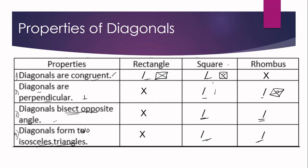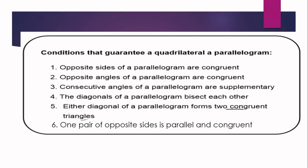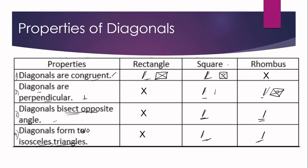Notice that all of our properties are possessed by the square. Why? Because if a property is true for a rectangle, it is also true for a square, since a square is a rectangle. Likewise, if a property is true for a rhombus, it is also true for a square, since a square is also a rhombus. So all six conditions — including these four involving diagonals — are all true for a square.